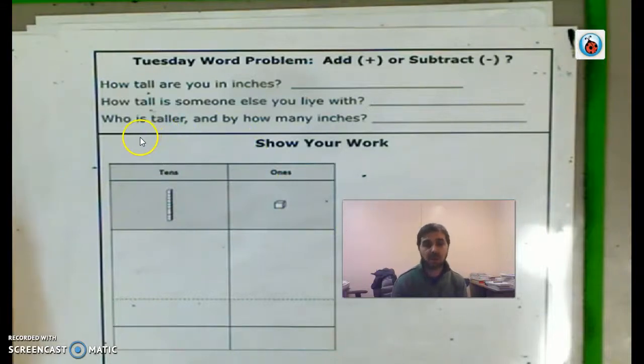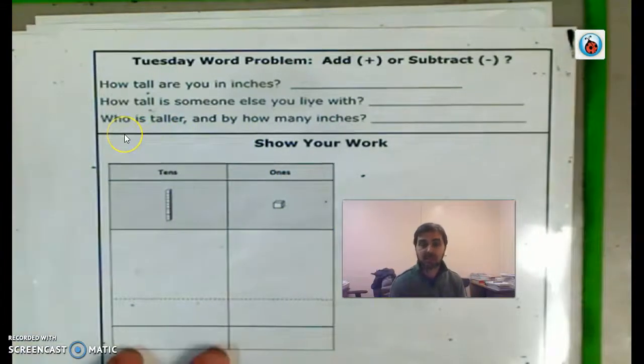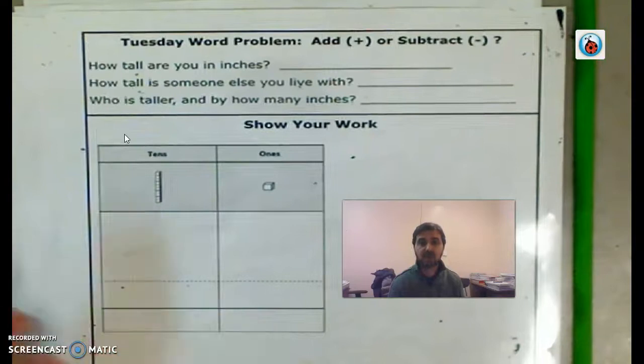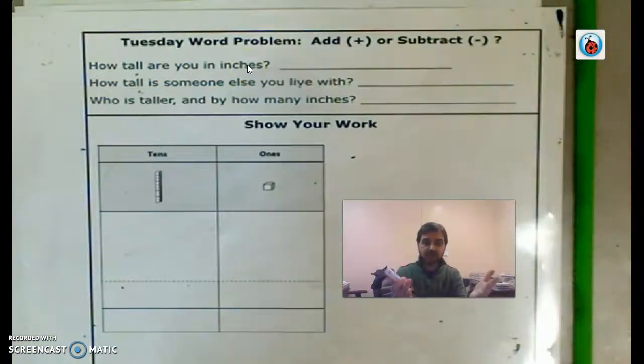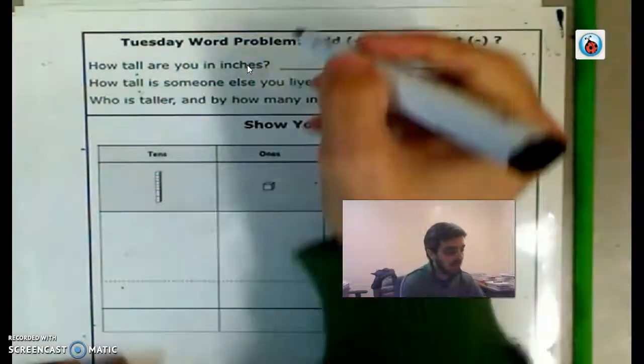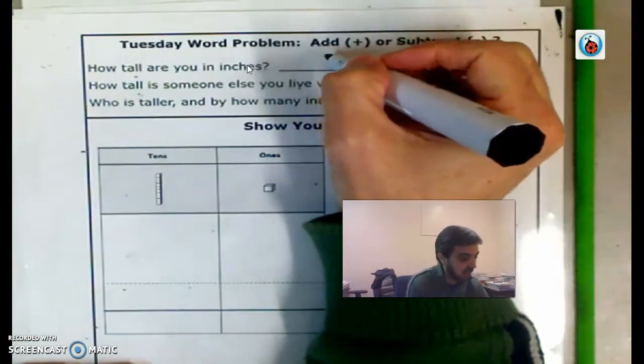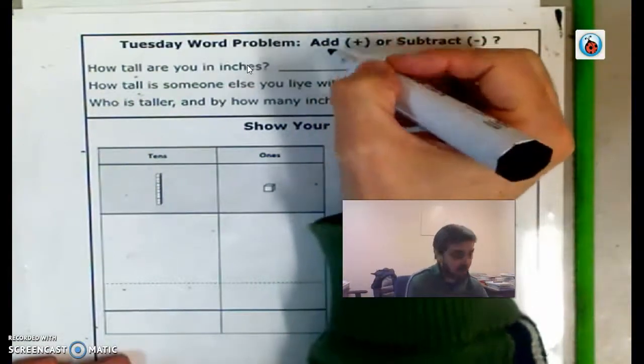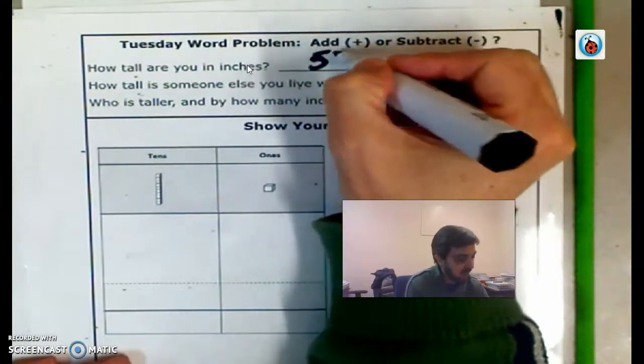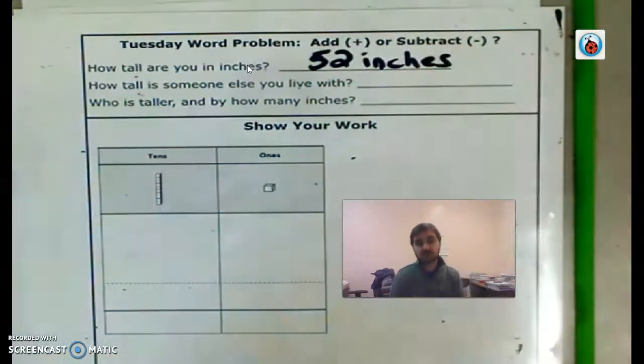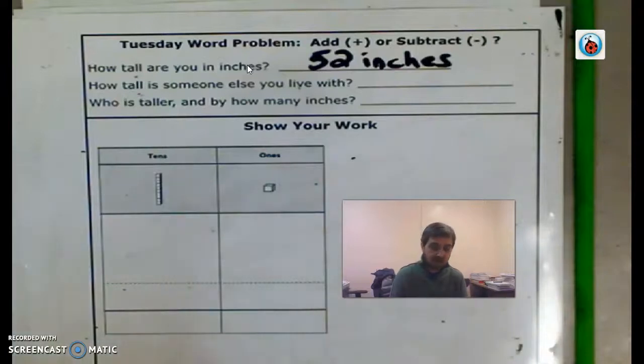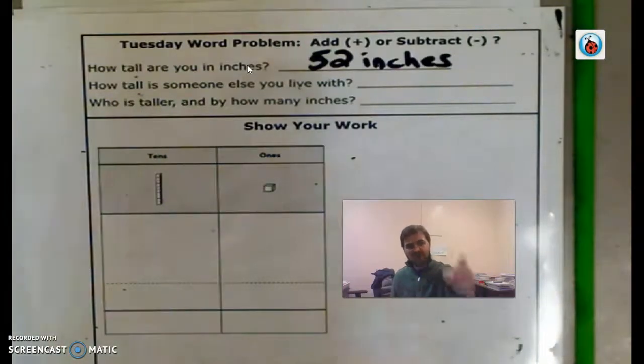So let's take a look at this. It says Tuesday word problem. The first question is, how tall are you in inches? You already know that from the work you did yesterday. Let's pretend, let's say that you are 52 inches. Maybe you're shorter than that, maybe you're taller than that. It doesn't matter. Whatever height you are is fantastic, because you are fantastic.